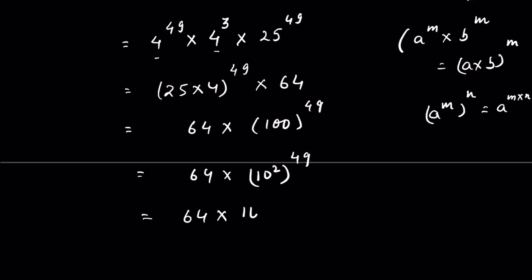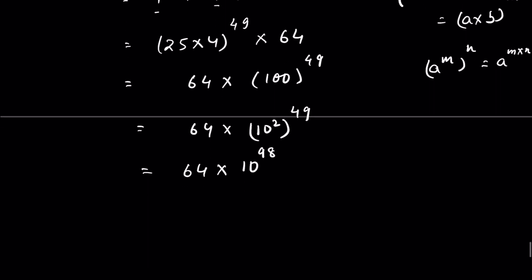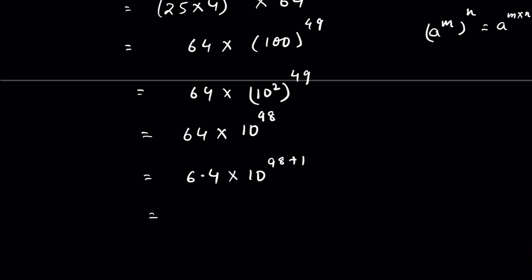So this is 64 times 10 to the power 98. You can also write this as 6.4 times 10 to the power 98 plus 1, because when you remove the decimal there will be a factor of 10 below, so you subtract 1. The answer is 6.4 times 10 to the power 99.